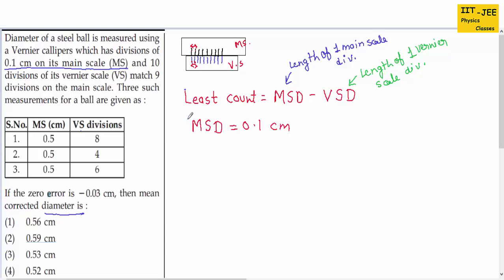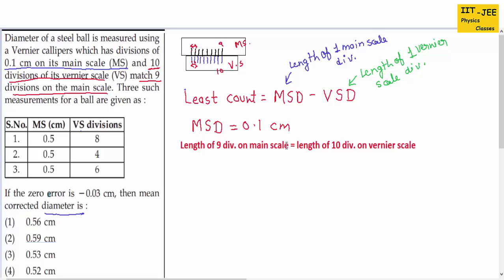Now we need to find VSD. The given information states that 10 divisions of the vernier scale match 9 divisions on the main scale. Suppose on the main scale there are 9 divisions and on the vernier scale there are 10 divisions that match — so the length of 9 divisions of the main scale equals the length of 10 divisions on the vernier scale. The length of 9 main scale divisions is 9 times MSD, and the length of 10 vernier scale divisions is 10 times VSD.